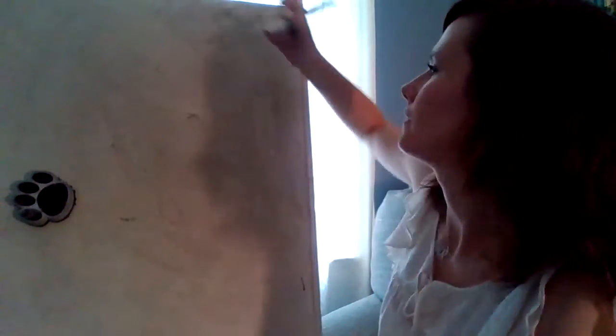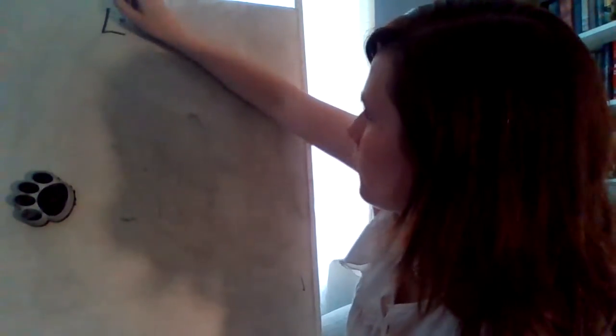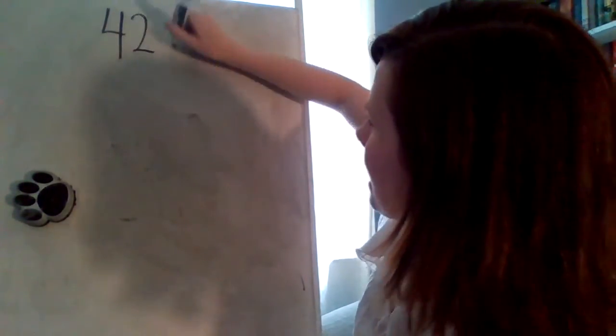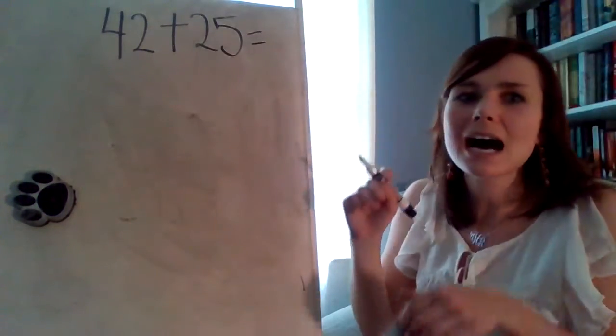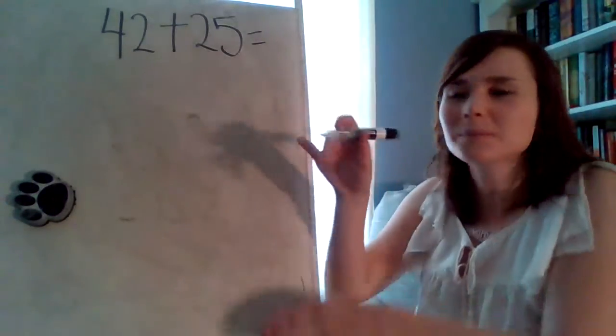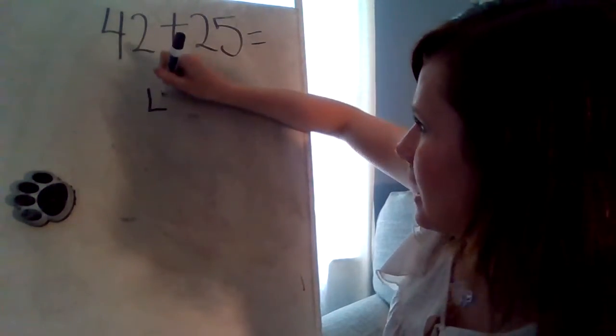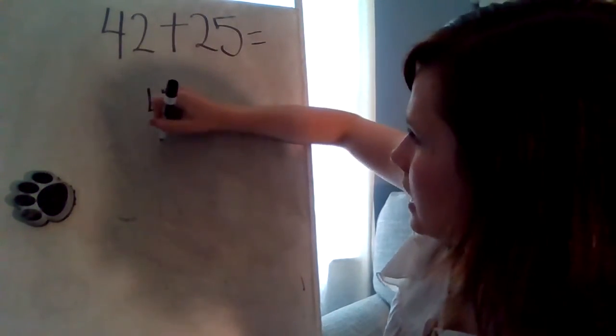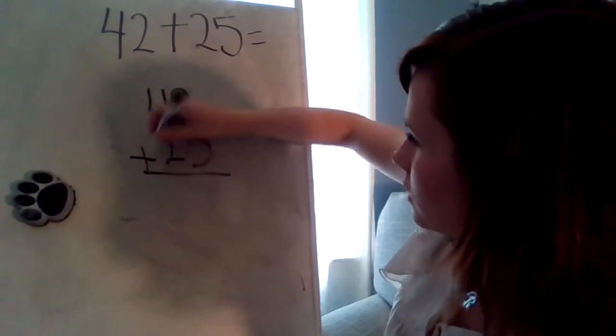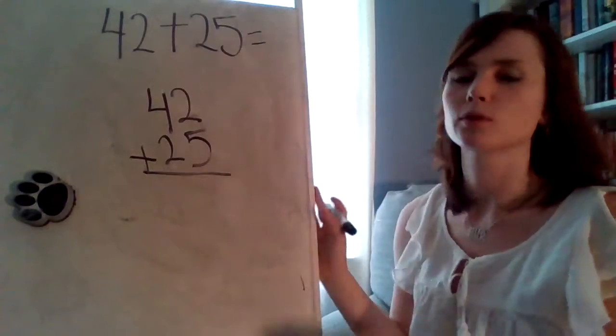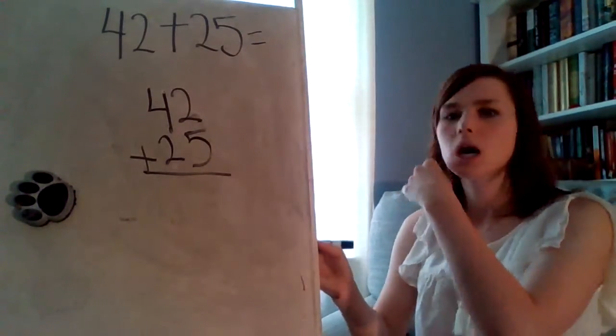All right. Let's do 42 plus 25. 42 plus 25. All right. Let's stack them. Stack them. So we'll put 42 on top and 25 right underneath it. And we have, look, boys and girls, the 1s are lined up. The 10s are lined up. Super duper important.